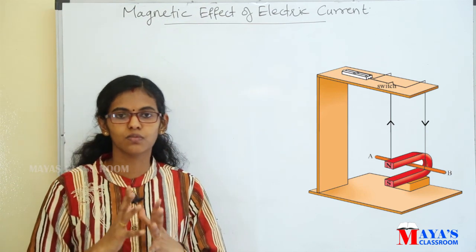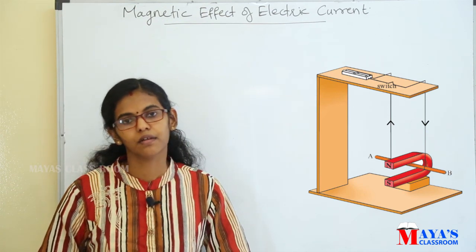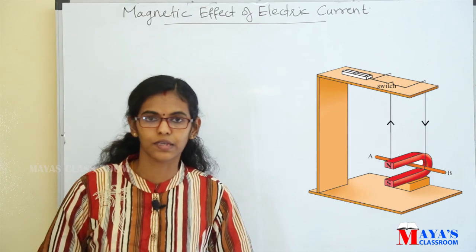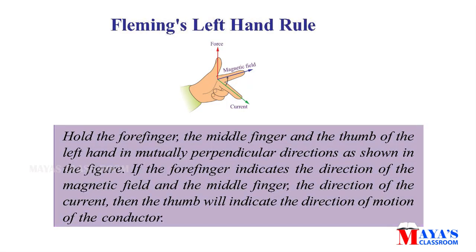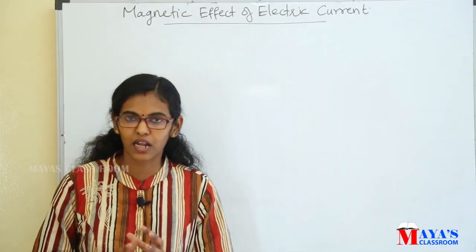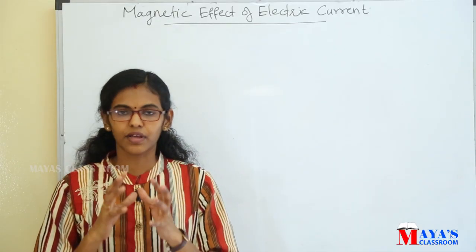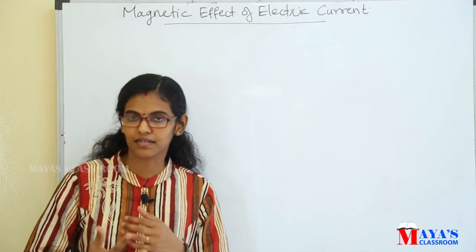The conductor came into movement in these elements. This is Fleming's Left-Hand Rule. Hold the forefinger, the middle finger, and the thumb of the left hand in mutually perpendicular directions as shown in the figure. If the forefinger indicates the direction of the magnetic field and the middle finger the direction of the current, then the thumb will indicate the direction of motion of the conductor.